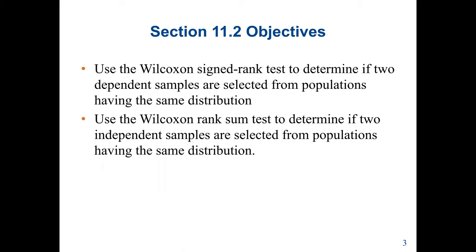One of the disadvantages of the sign test, which we discussed in previous lectures, is that it wastes information. The sign test merely counts the number of positive or negative signs in a paired differences experiment and ignores the magnitude of the differences. The Wilcoxon signed-rank test is a non-parametric technique which can be used to evaluate a paired difference experiment, designed to detect populations whose centers are shifted to the right or left of each other. No distributional assumption is required.